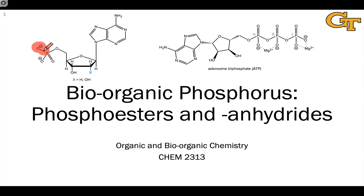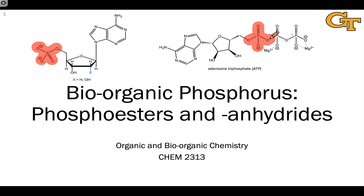In biochemical systems, phosphorus typically appears in the plus 5 oxidation state as part of some kind of oxyanion, such as the phosphate anion. It's used for a variety of purposes: as an anionic tag, as a source of energy in the form of polyphosphates with multiple phosphate groups linked together, and for other purposes. This series of videos is all about the bioorganic role of phosphorus.